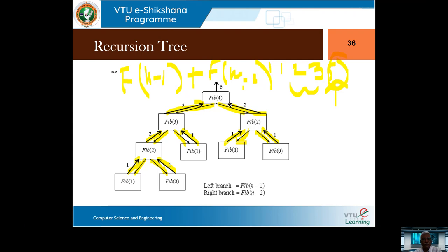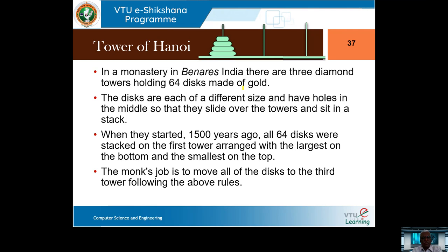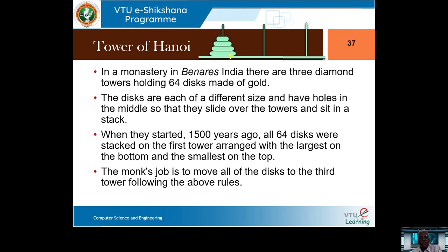Now we move on to the next very interesting example for recursion. People say that the Towers of Hanoi problem is best solved using recursion rather than an iterative methodology. There is some history for this Tower of Hanoi going back 1,500 years, so it's a very old problem. There are 3 diamond towers — we call them pegs — and we name them A, B, C. In algorithm terms we also use names like beginning, auxiliary, and end.